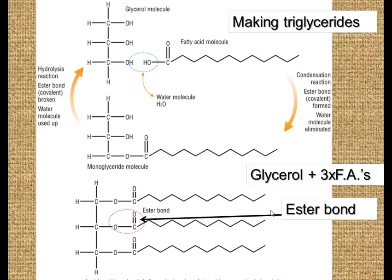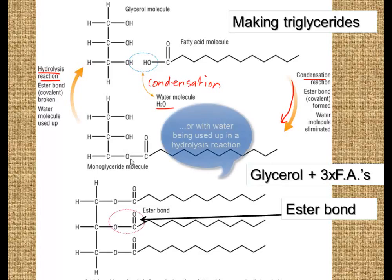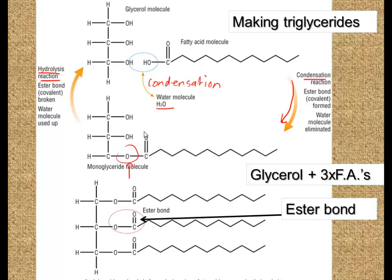What do we do with these fatty acids and glycerol molecules? We have a reaction excluding a water molecule in a condensation reaction. Going back the other way will be a hydrolysis reaction. That leaves us with this oxygen atom acting as a bridge between our fatty acid and the glycerol, and this whole structure is called an ester bond. So the fatty acids are held to glycerol via ester bonds. This is a monoglyceride molecule — it's got one fatty acid on it. And this one is our triglyceride molecule — we've got one, two, three fatty acids on it.